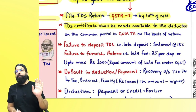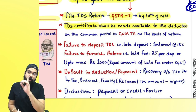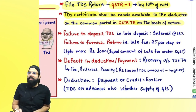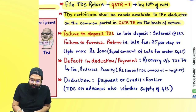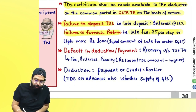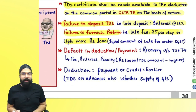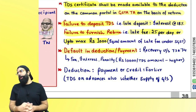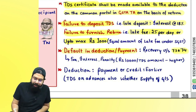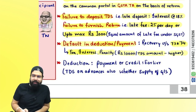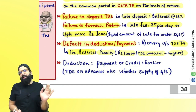The TDS certificate is made available to the deductee on the common portal via GSTR-7A. Late deposit of TDS attracts interest. Late filing of the return attracts a late fee of ₹25 per day under CGST and ₹25 per day under SGST, up to a maximum of ₹1,000 under CGST and ₹1,000 under SGST. Default in deduction or payment results in a demand order under Section 73 or 74, demanding tax, interest, and a penalty of ₹10,000 or the TDS amount, whichever is higher, under both CGST and SGST.